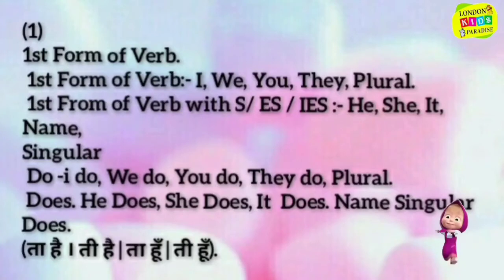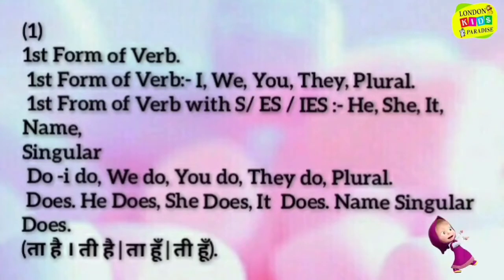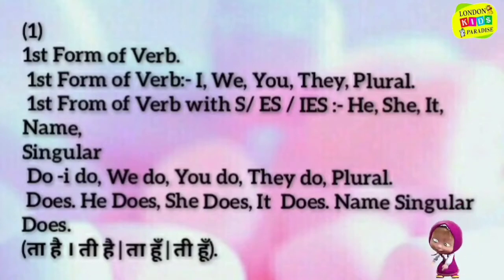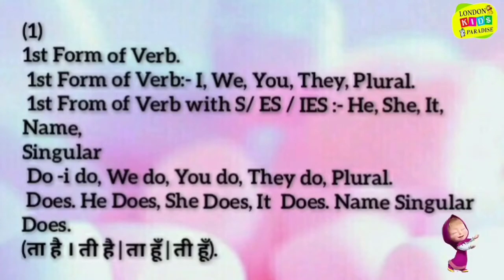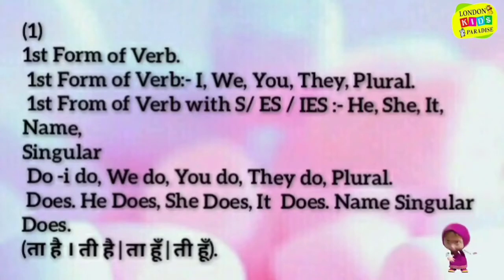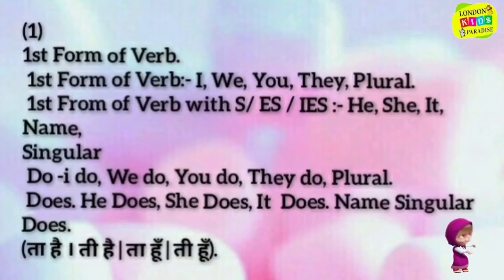First form of verb: I, we, you, they (plural) take the first form of verb. With he, she, it, name (singular), add 's' or 'ies'. I do, we do, you do, they do (plural). He does, she does, it does (singular).